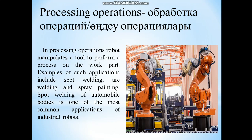Processing operations – обработка операций. In processing operations, a robot manipulates a tool to perform a process on the work part. Examples of such applications include spot welding, arc welding, and spray painting. Spot welding of automobile bodies is one of the most common applications of industrial robots.